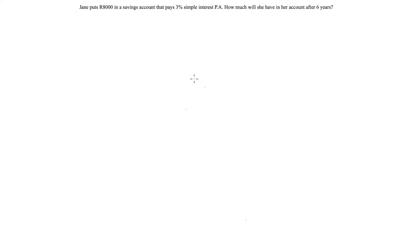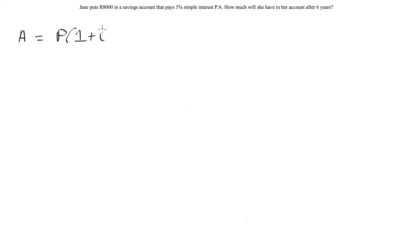To tackle this question, let's first write down our simple interest formula. The amount we have after a certain time is equal to the principal amount — that is the amount initially loaned or deposited — multiplied by 1 plus I times N, where I represents our interest rate (in this case 3% simple interest) and N is the number of years.